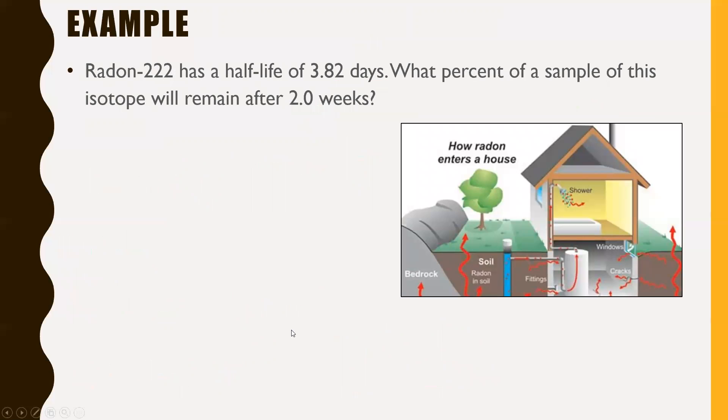Next one. Radon-222 has a half-life of 3.82 days. What percent of a sample of this isotope will remain after 2.0 weeks? Very mild curveball here. They gave you days and then they gave you weeks. Those units don't interact well with each other. So let's turn two weeks into days. That's exactly 14 days. So we know the half-life, that's T₁/₂. We know the elapsed time is T. We're looking for the percentage of a sample that would remain after two weeks. So we're looking for N.